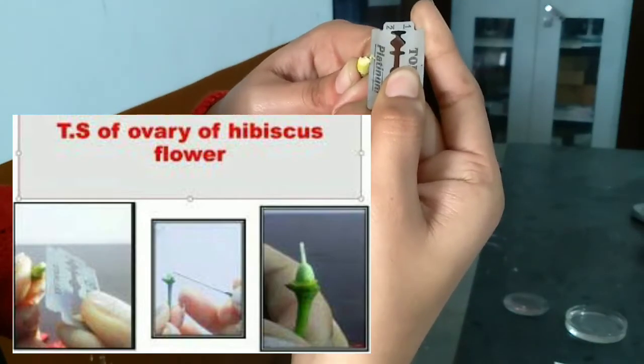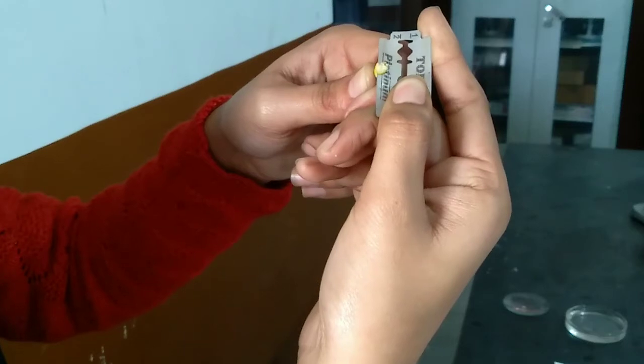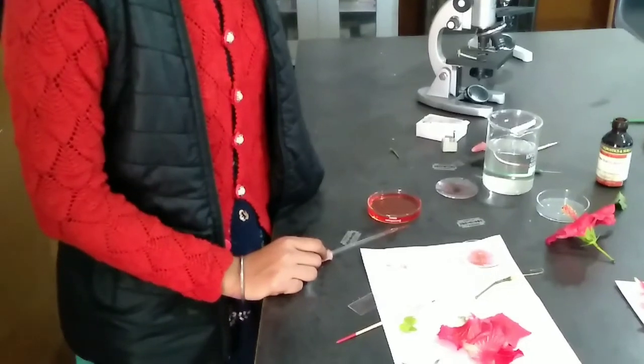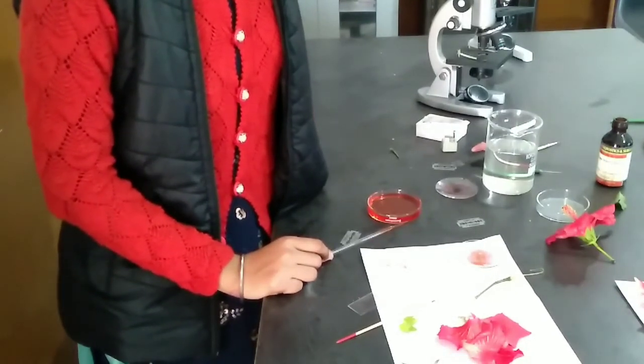Now, cut the ovule from the ovary, select one specimen and stain it, then observe under the microscope.